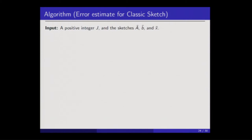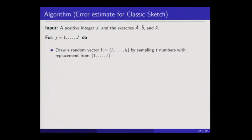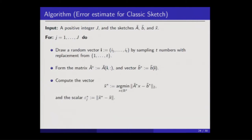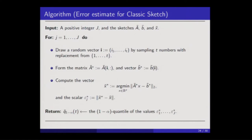For the bootstrap algorithm for sketch-and-solve: again I have a loop where the only inputs are the sketches — I don't need to touch the original full inputs. I draw a vector of indices with replacement from the set one through t, take those indices and plug them into the sketch to get rows, and likewise for entries of B-tilde. Then I solve the associated least squares problem of A-tilde-star and B-tilde-star, giving a bootstrap version of the error variable. When the loop is done, I collect the error variables and take the associated quantile. For the IHS algorithm, since it's iterative, the good news is you only have to run the bootstrap after the final iteration, not every iteration.